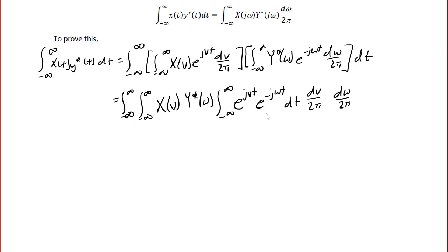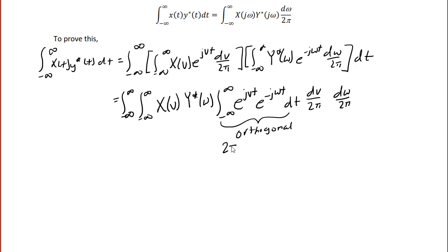What you should notice here is that these are the product of complex exponentials. We have proven in a prior lecture that this means they are orthogonal, and since they are orthogonal, the result of integrating them is 2π δ(ω − v).